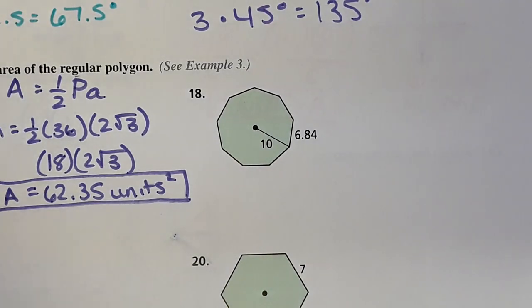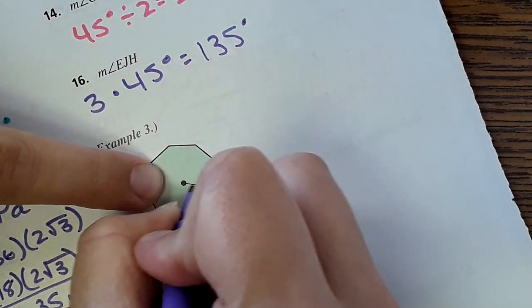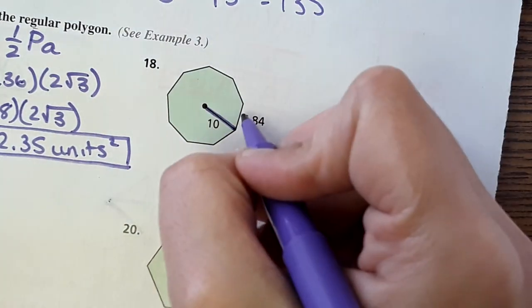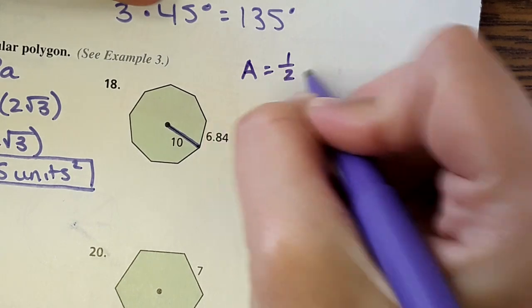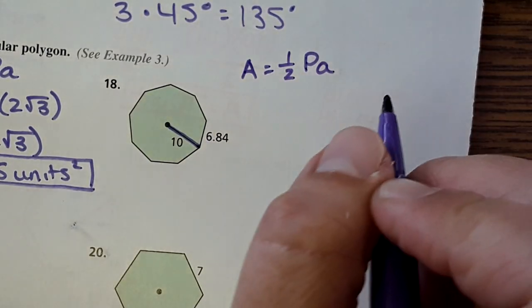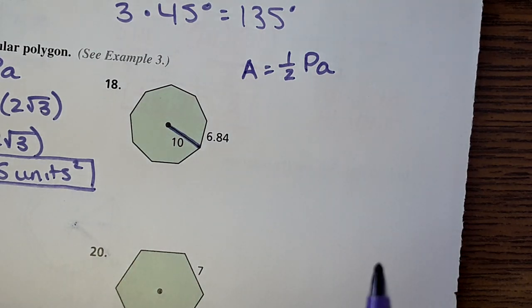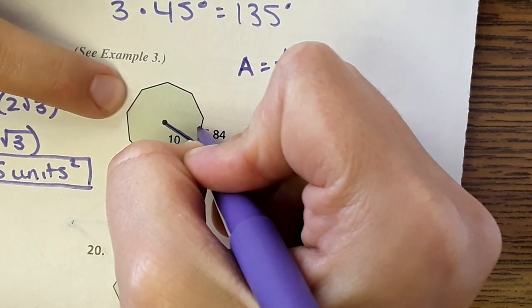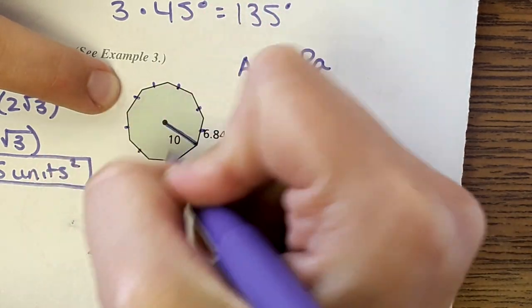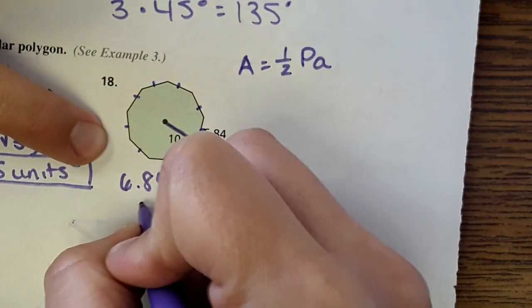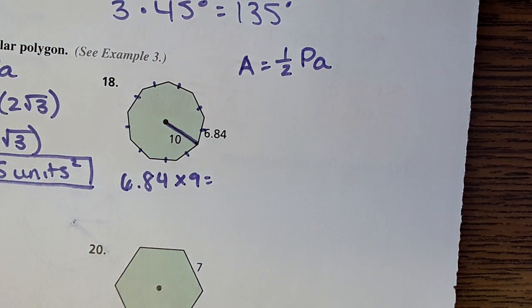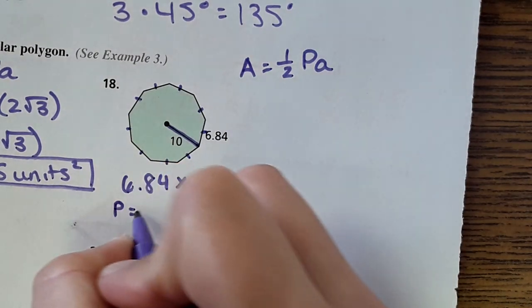Okay, number 18 here. We have a radius shown and one side is 6.84 — we're told it's a regular polygon. The equation is area equals one-half perimeter times the apothem, but we don't have an apothem. For the perimeter we can multiply the side length by the number of sides. Counting the sides: 1, 2, 3, 4, 5, 6, 7, 8, 9 sides. So we take 6.84 times 9 to get the perimeter, which is 61.56.